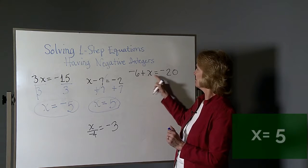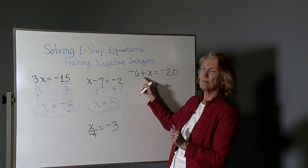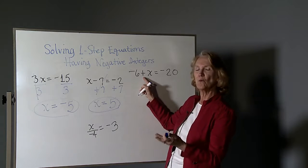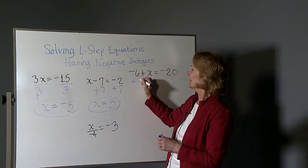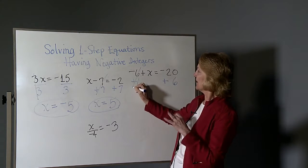This one says negative six plus x equals negative twenty. Opposite operation. The opposite of adding negative six would be to subtract it or you can think of add a positive six. Okay, on this side, they go away.